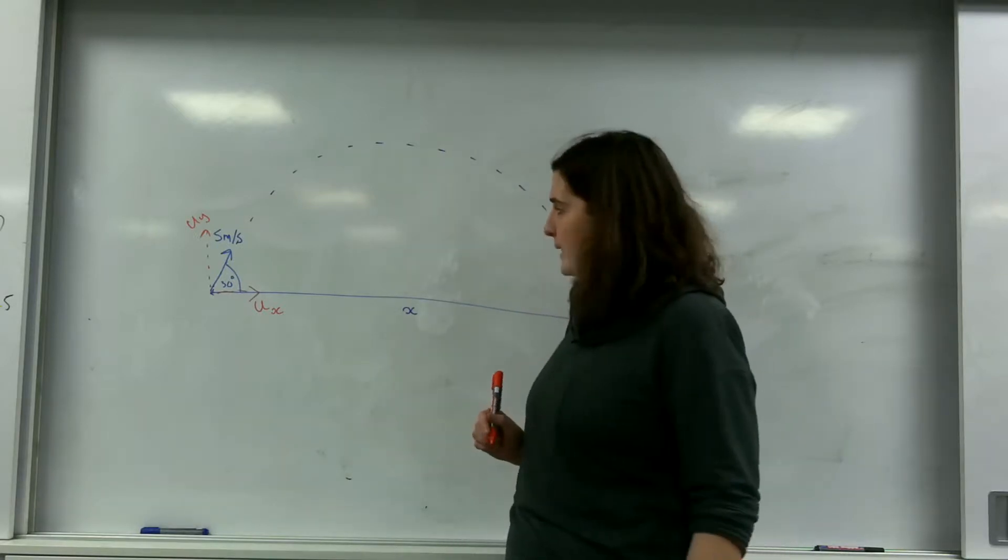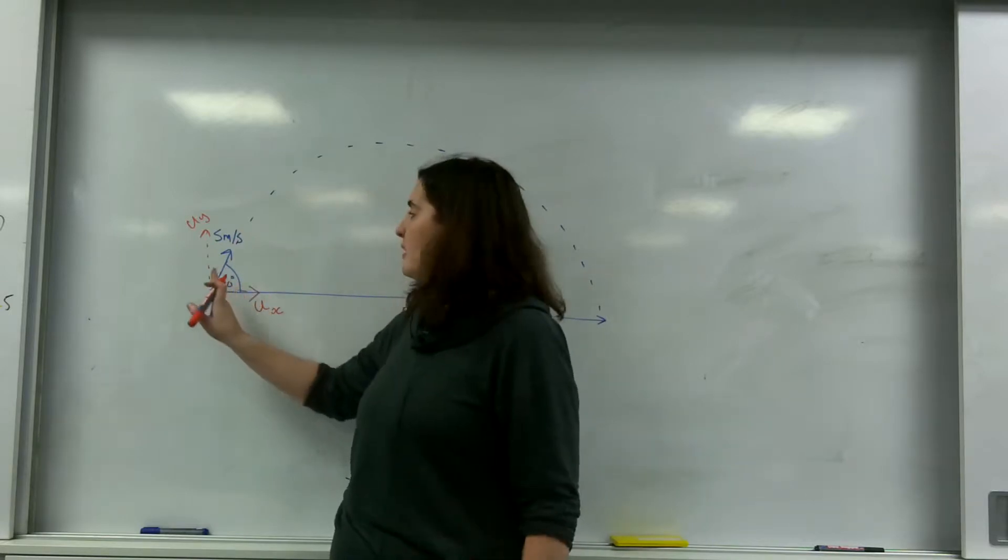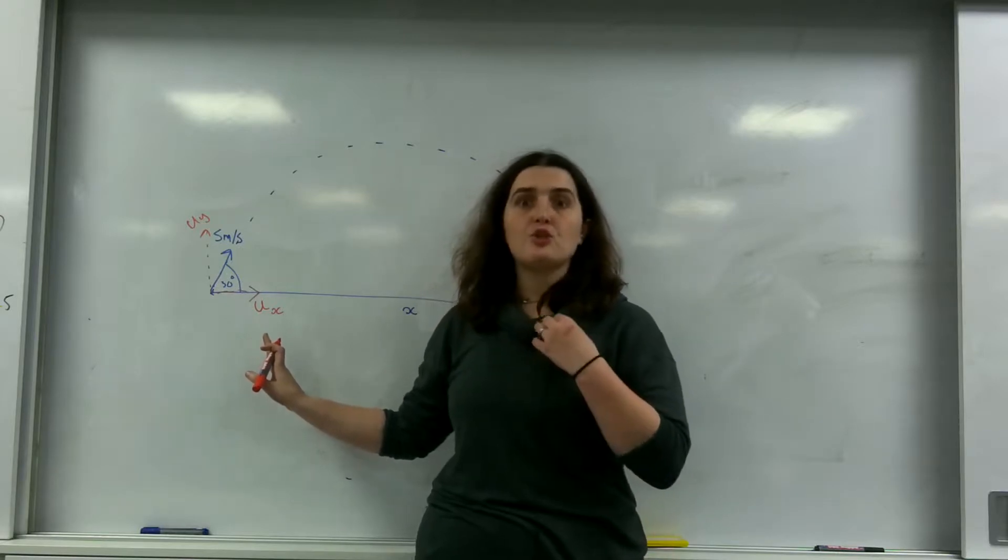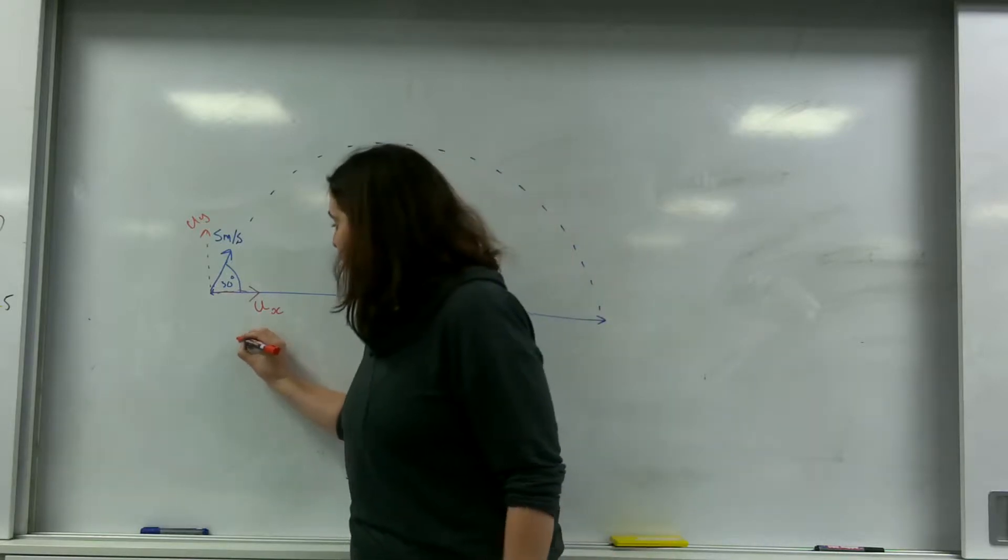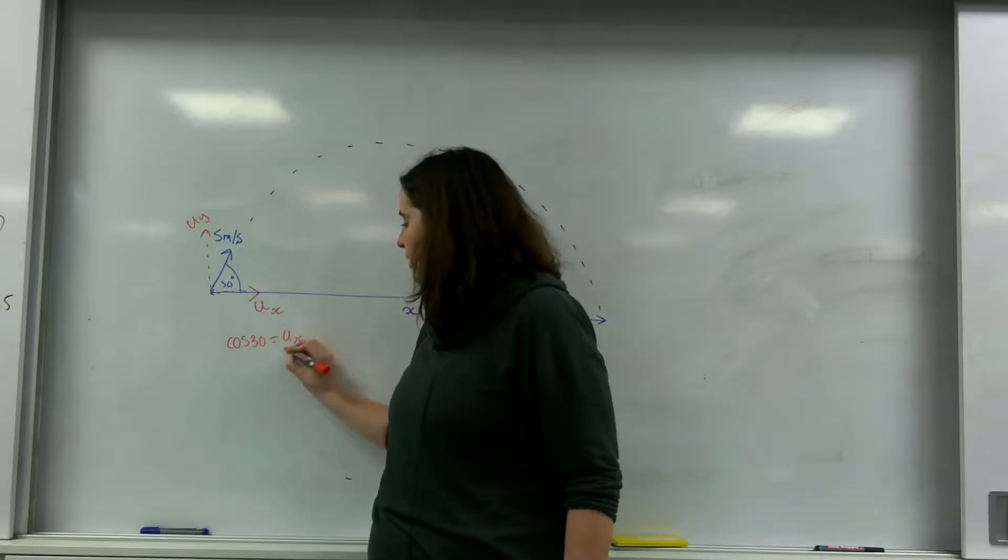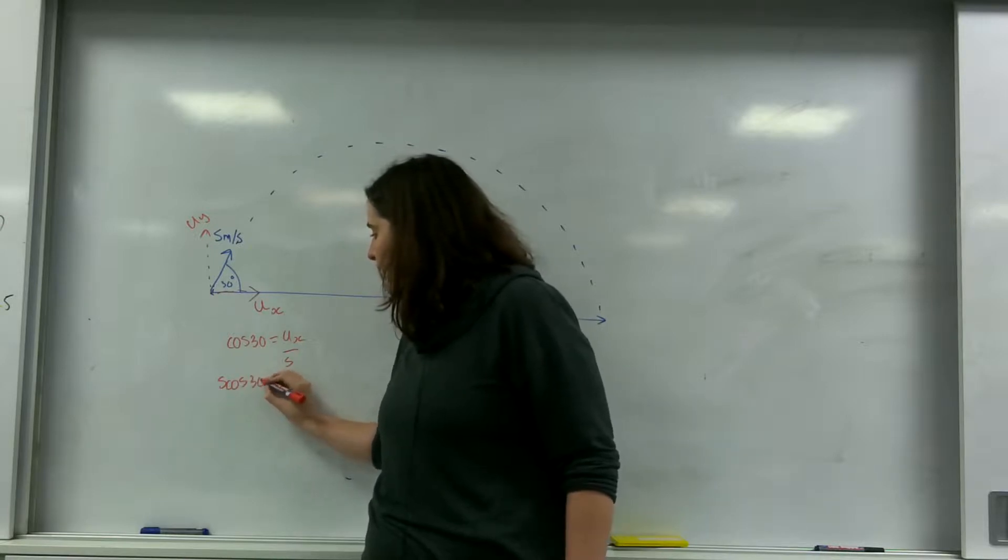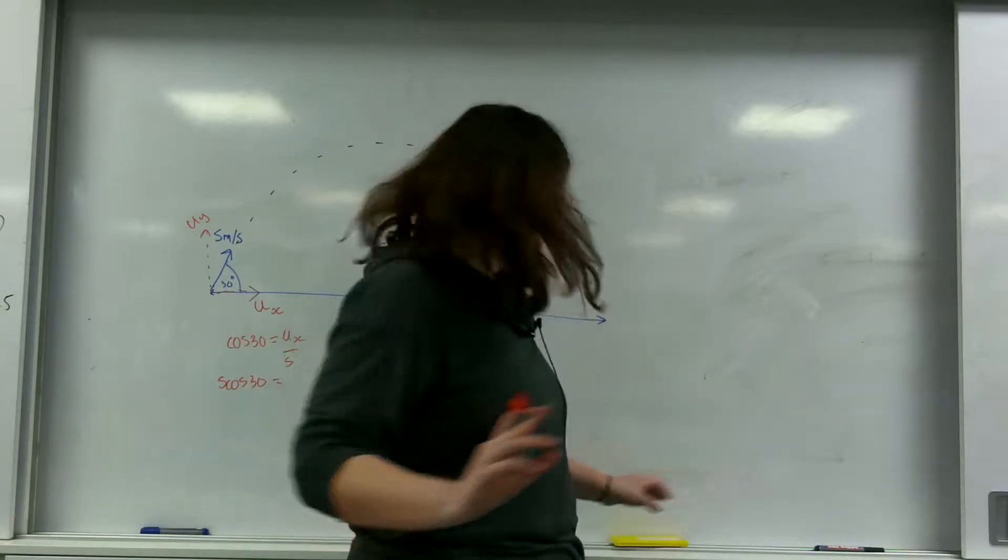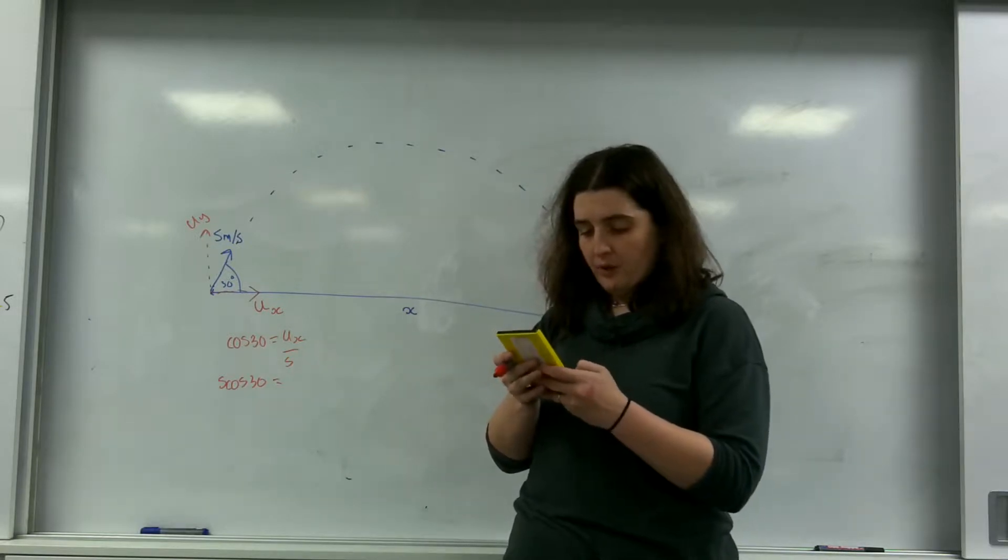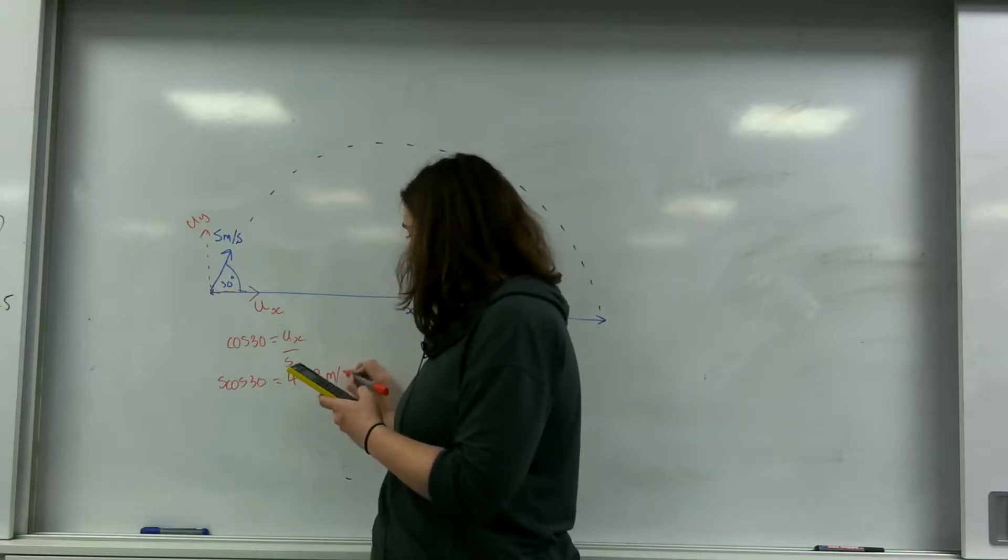You can then of course calculate it. Remember, the real thing is the hypotenuse. So this is the hypotenuse and that is the adjacent, so I'm going to use cos. So cos 30 equals ux over 5. So 5 cos 30 equals, grab the calculator, 5 cos 30 is 4.33 metres per second.